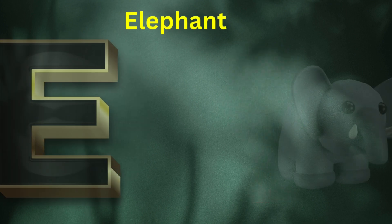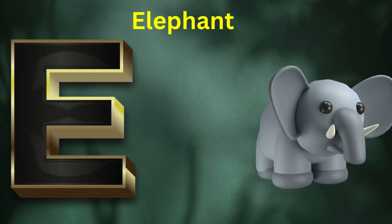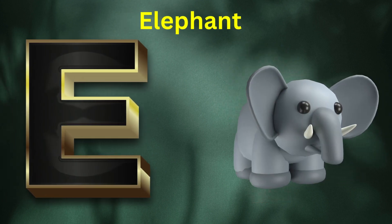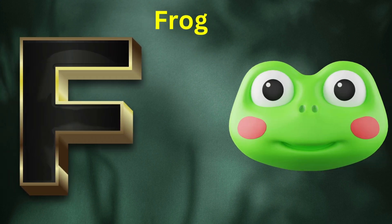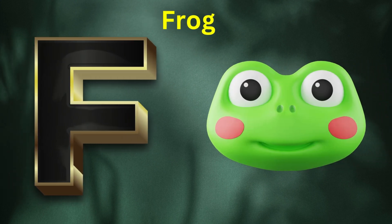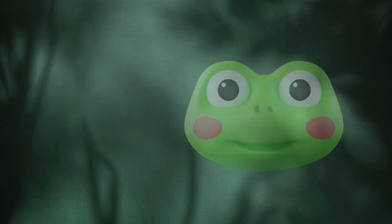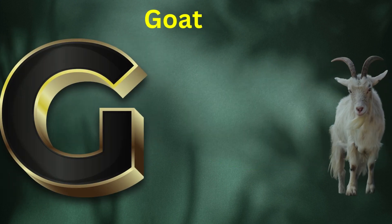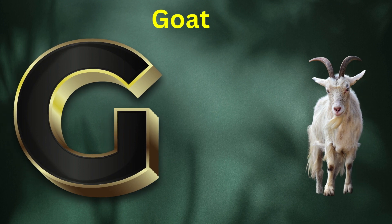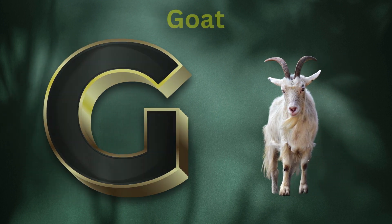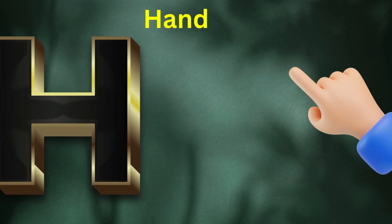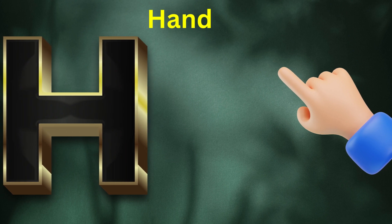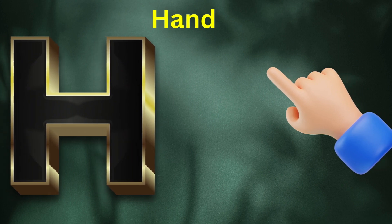E is for Elephant. E-E-Elephant. F is for Fish. F-F-Fish. G is for Gorilla. G-G-Gorilla. H is for Horse. H-H-Horse.